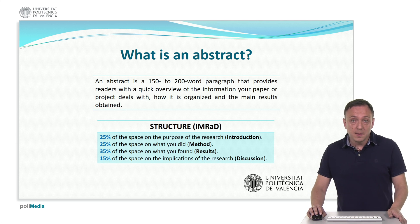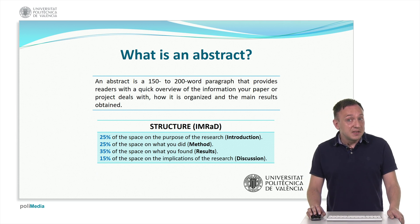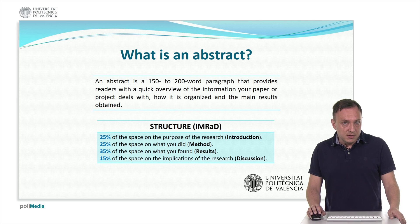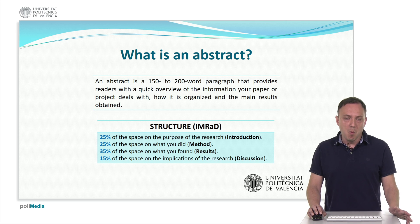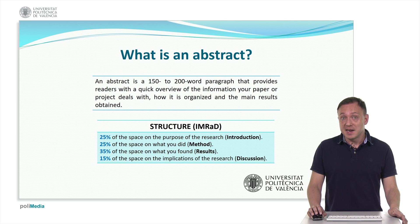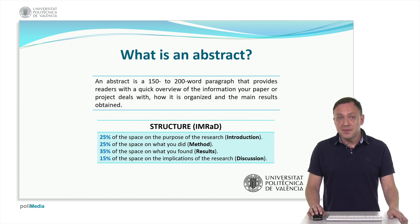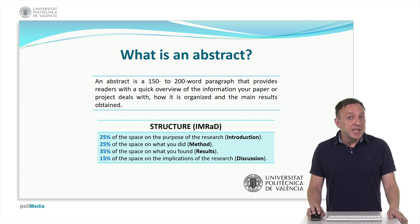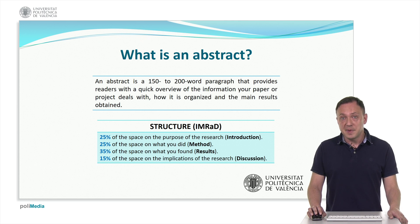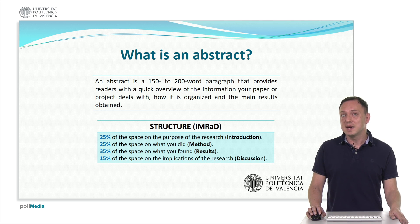Your abstract should follow the IMRAD structure — that is: introduction, method, results, and discussion. Abstracts usually spend about 25% of the space on the purpose of the research, that is the introduction; 25% of the space on what you did, that is the method employed to carry out the study; 35% of the space on what you found — the results. Here you should just touch upon the main results obtained, but you can't talk about everything in great detail — that can be read in the actual paper.